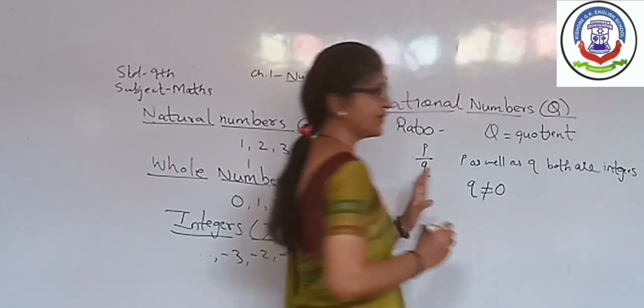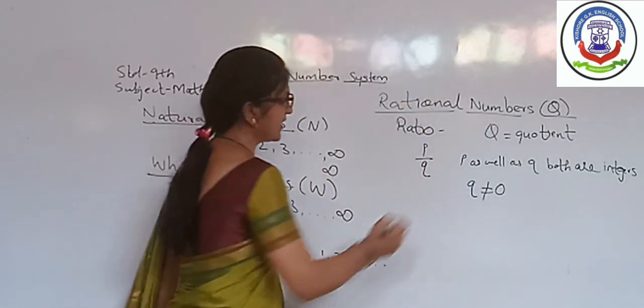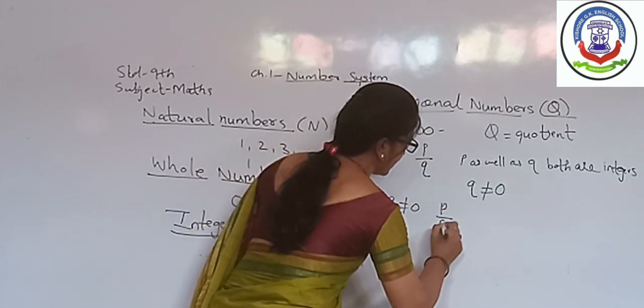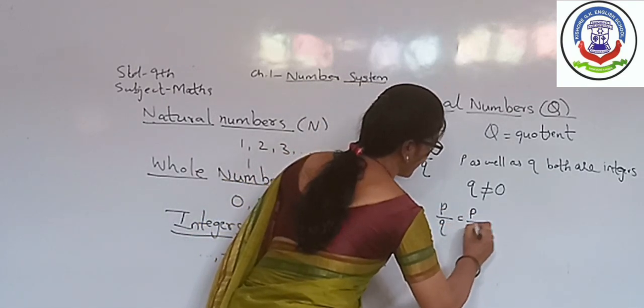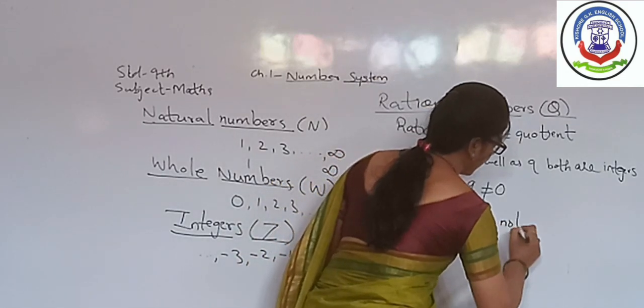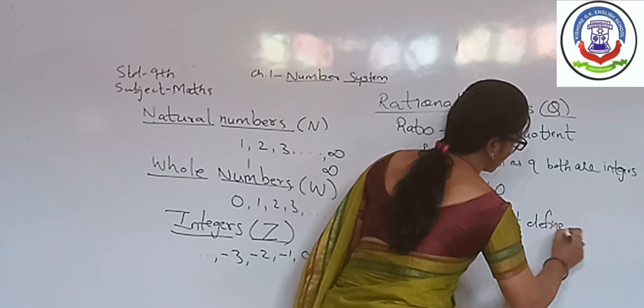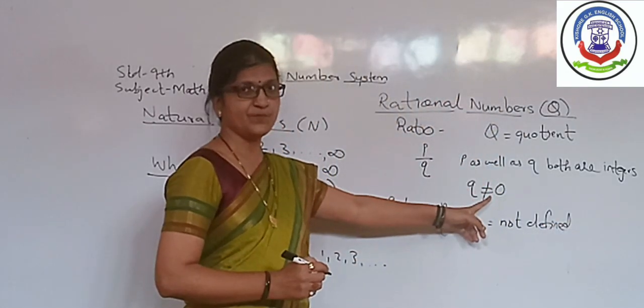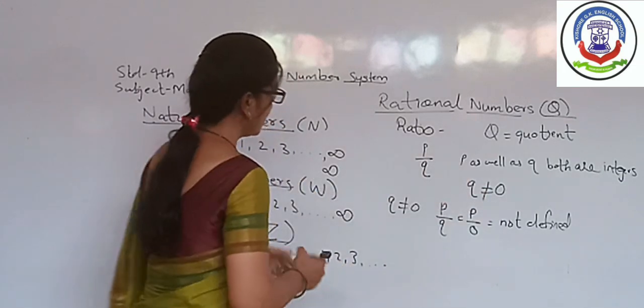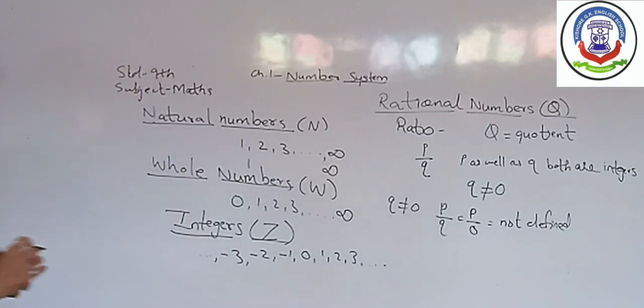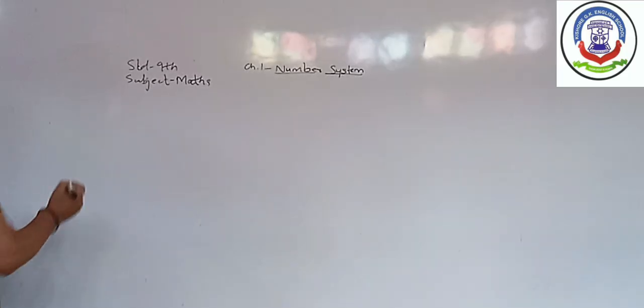Next condition which is necessary for a given number to be a rational number is Q not equal to 0. What will happen if Q is 0? In that case, P upon Q, that is P upon 0, which is not defined. Therefore, the condition we have written is Q not equal to 0. Now, we will find out examples.